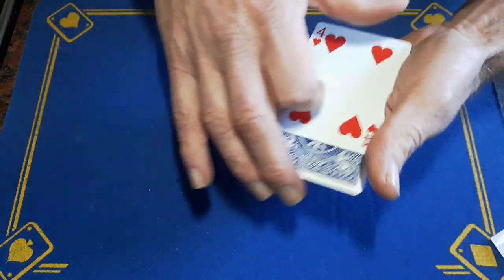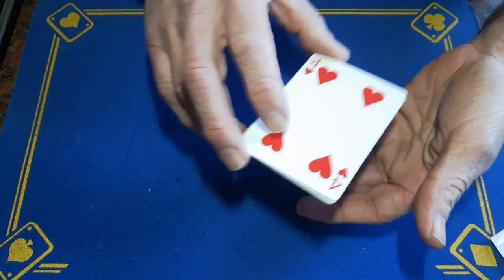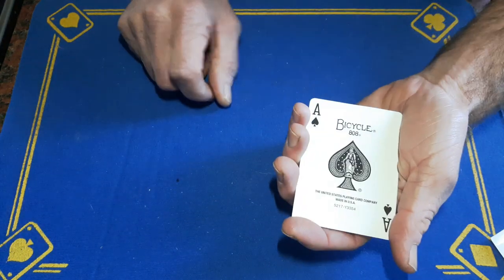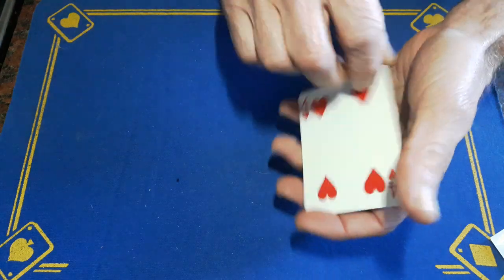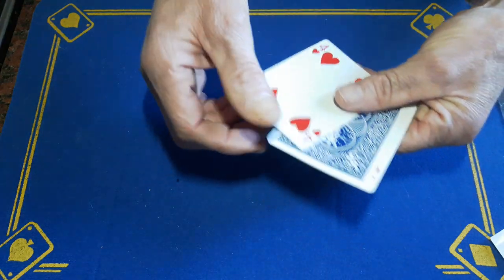I'm going to take the ace and I'm going to place it between the two fours. We're going to give it a little magical wave and that ace appears on the bottom. That's mad. We're going to give it another little magical wave and that ace once again rises to the middle.